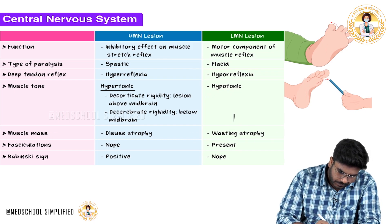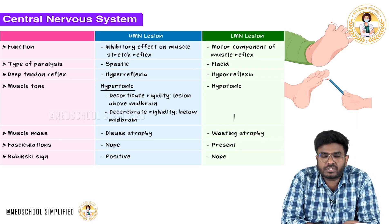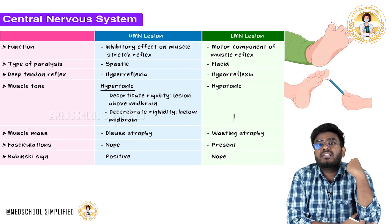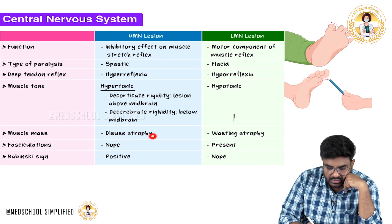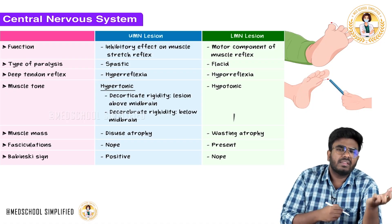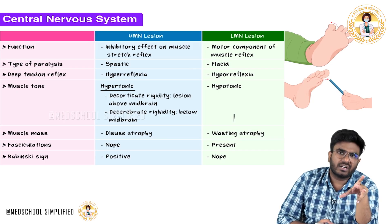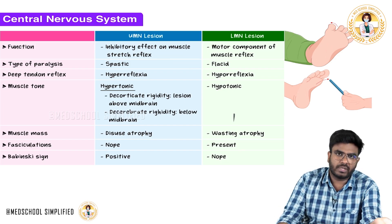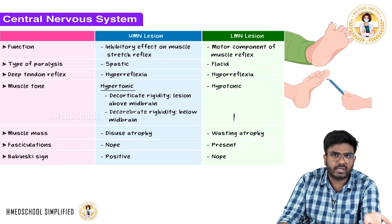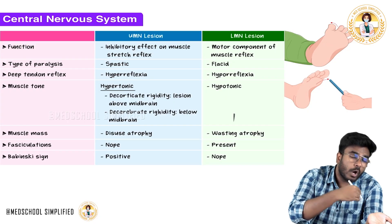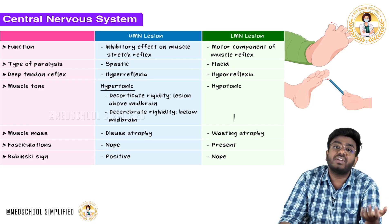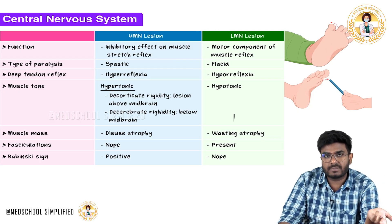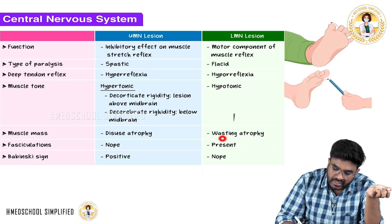Looking at muscle mass: in upper motor neuron lesions, the continuous spastic contraction leads to disuse atrophy — the muscles are not being used properly, causing atrophy. In lower motor neuron lesions, alpha motor neurons are not working, so the person is unable to use the muscles. Not using the muscles causes muscle wasting — wasting atrophy is seen in lower motor neuron lesions.